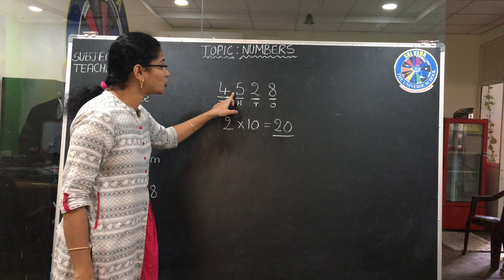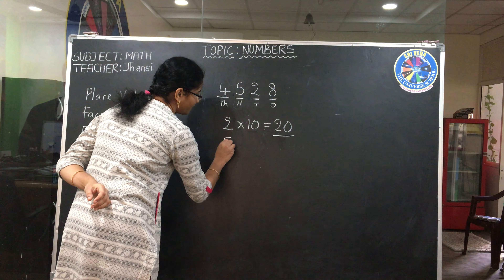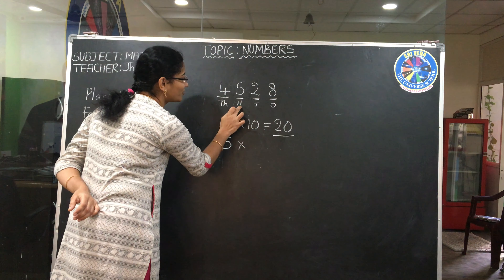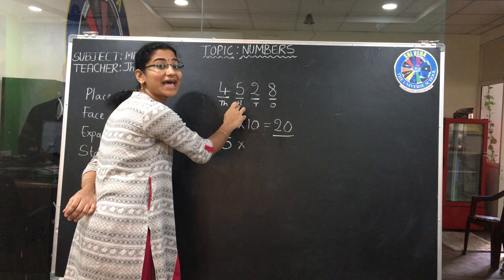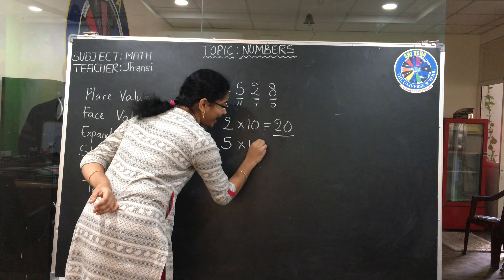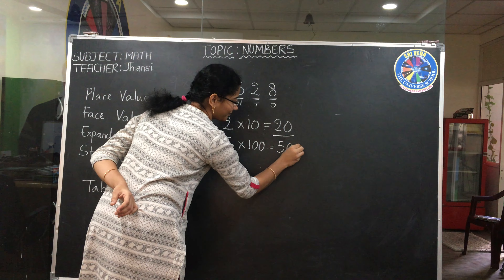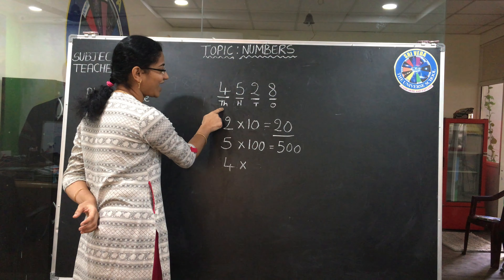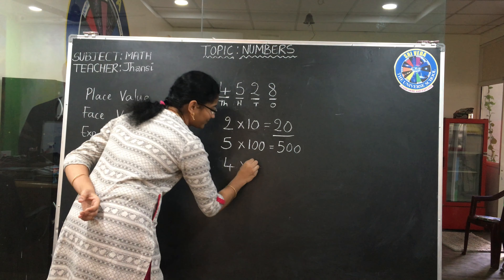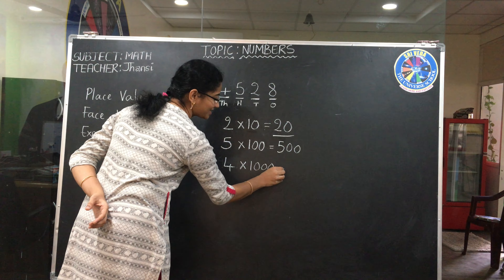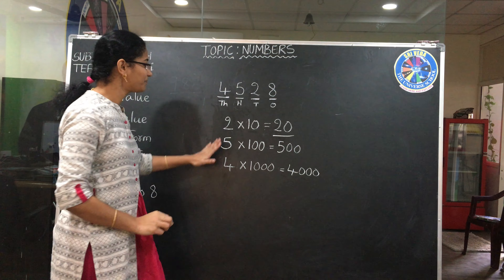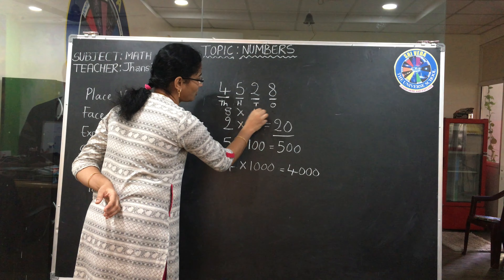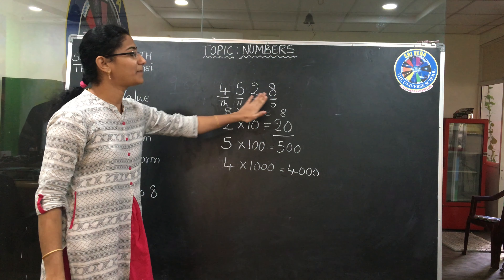Once again, we'll see. Now I want to know the place value of 5. How do you find the place value? You have to multiply with the value of the digit. Which place is it? H means hundreds — 5's place is hundreds, which means 100. 5 into 100 = 500. Next, place value of 4. Th means thousands — 1000. You have to multiply 4 with 1000. What is the answer? 4000. Very good. These are the place values of this particular number.